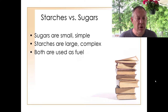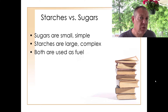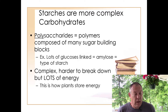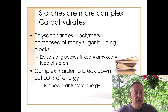Sugars tend to be small, simple, and easy to digest — you get energy quickly but not a lot. Starches are large, complex carbohydrates also used as fuel, but they stay in your bloodstream longer, have more energy, and that energy is released more slowly because they're harder to digest. These starches are polysaccharides — many saccharides joined together to make a very long chain.